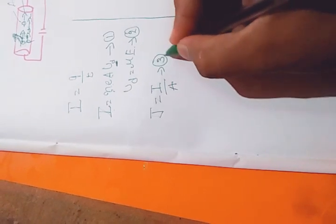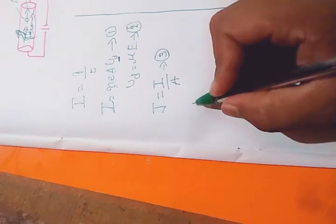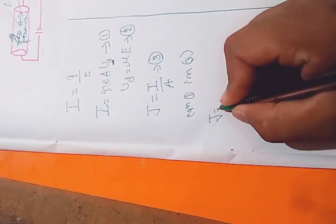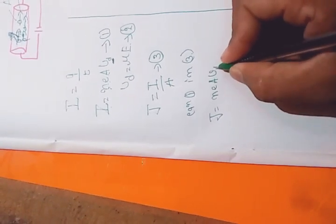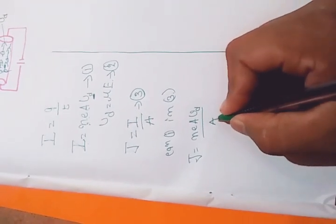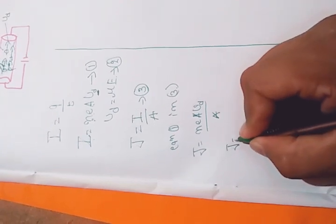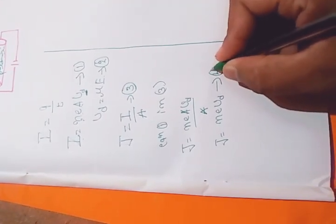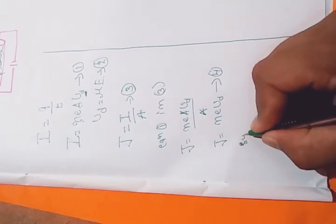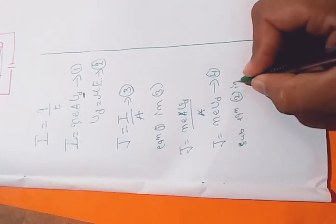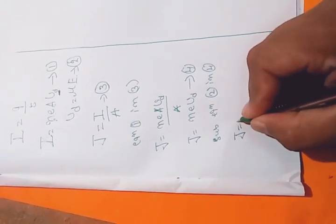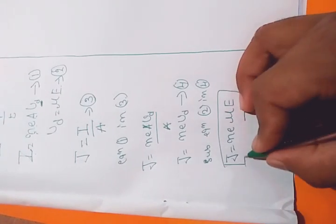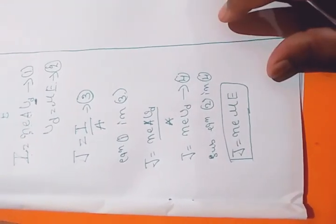Substituting expression 1 into expression 3, J equals N·E·A·Vd divided by A, and A gets cancelled, giving J equals N·E·Vd. Further substituting Vd equals μE, we get J equals N·E·μ·E. This is the generalized current density for an intrinsic semiconductor.